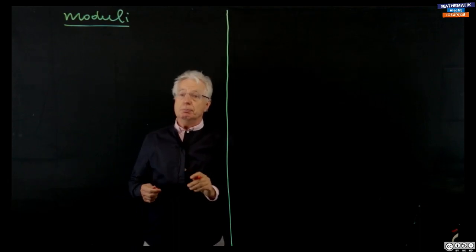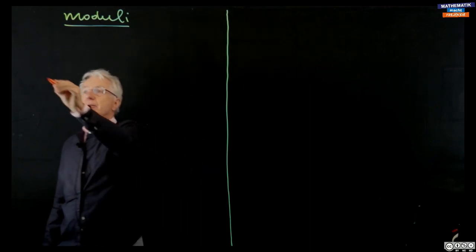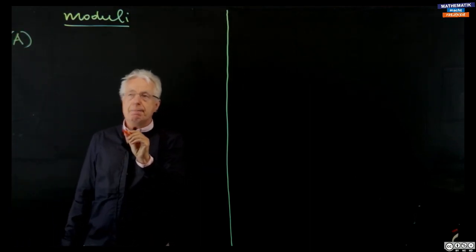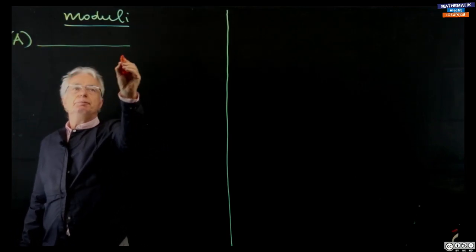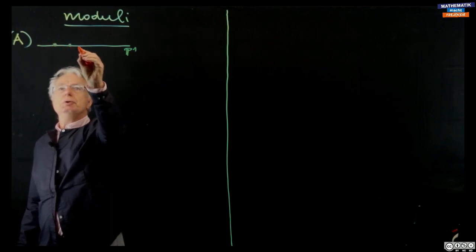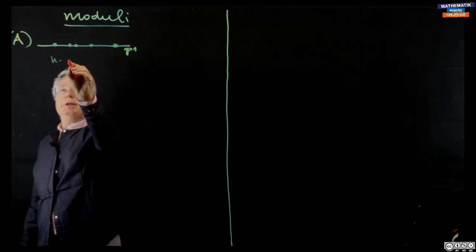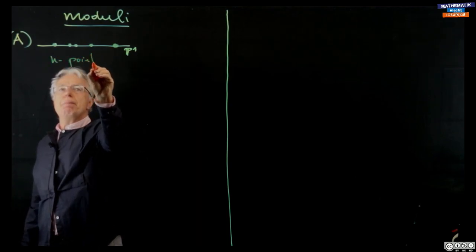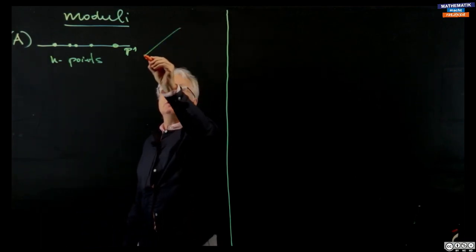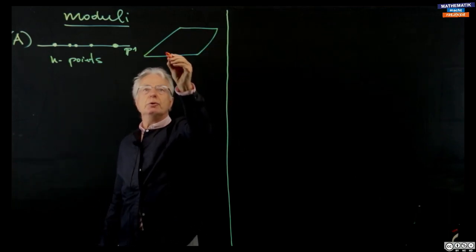My pens are not perfect, but I hope that you can read. In the first section, let me phrase what is the problem. We take the projective line P1 — here I draw it real — and we choose some points on it, so these will be n points. When you think of the complex numbers, you would draw this like this. Of course, you have to compactify.